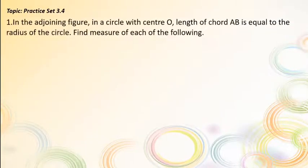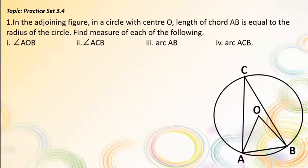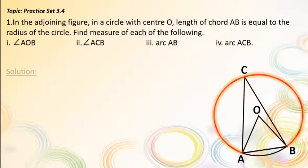Circle. Practice Set 3.4, Question No. 1. In the adjoining figure, in a circle with center O, the length of chord AB is equal to the radius of the circle. Find the measure of each of the following: angle AOB, angle ACB, arc AB, and arc ACB.